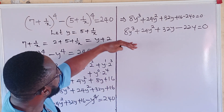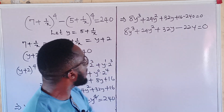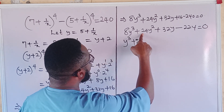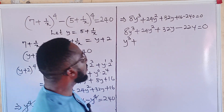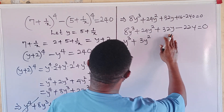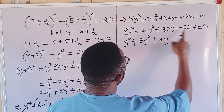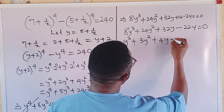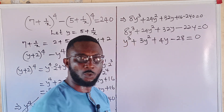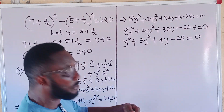The coefficients 8, 24, 32, and 224 are all multiples of 8, so we divide through by 8. That gives us: y^3 + 3y^2 + 4y minus 28 equals 0. This is our simplified cubic equation. According to the factor theorem and remainder theorem, we now test for rational roots.